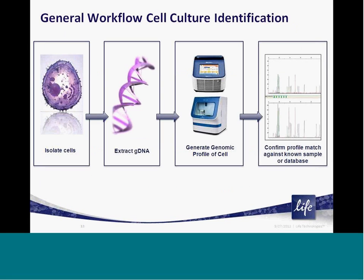Like our other kits for human identification, the Authentifiler kit follows a simplified and streamlined workflow. First, isolate your sample or cells of interest. Next, perform a genomic DNA extraction from the sample. Then amplify the STR loci fragments from the genomic DNA extract using the Authentifiler PCR amplification kit.